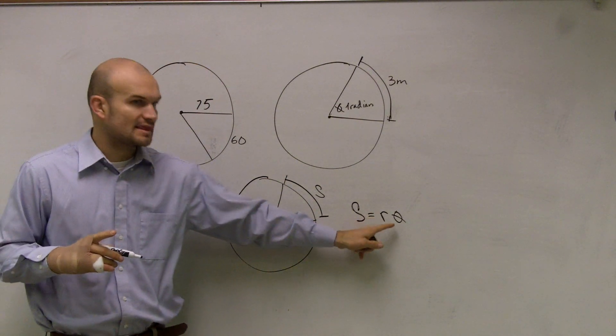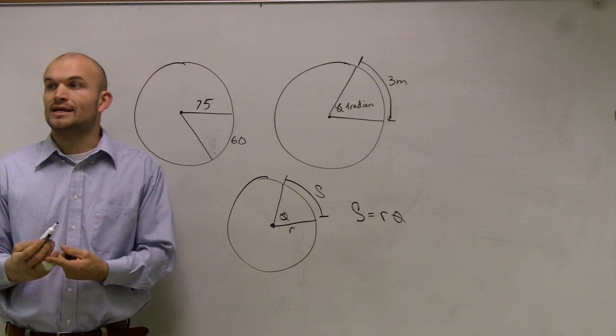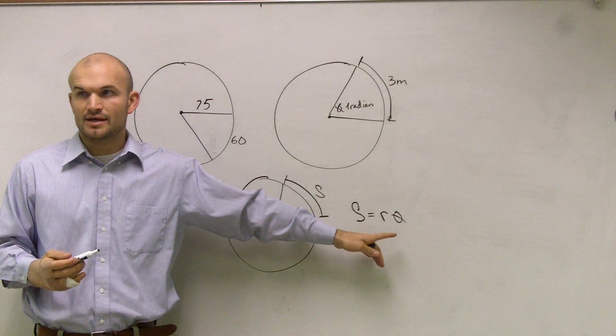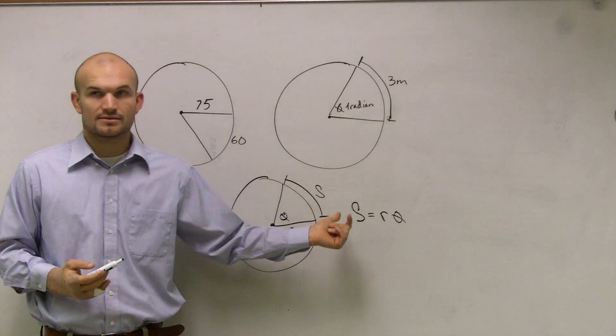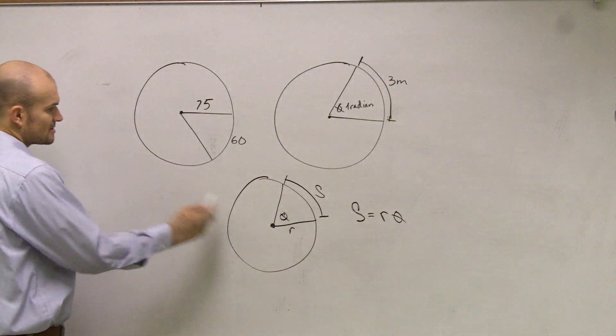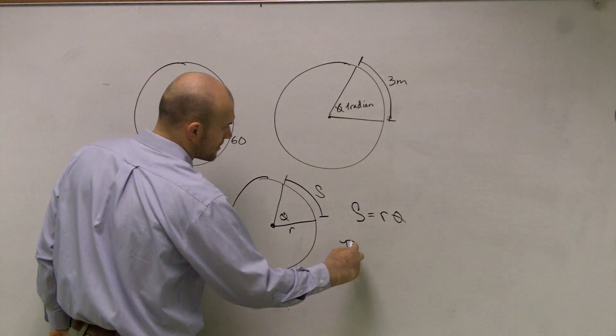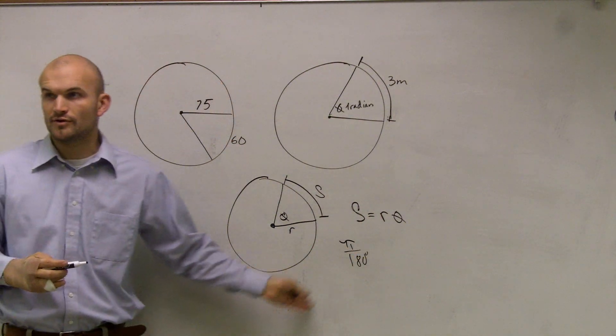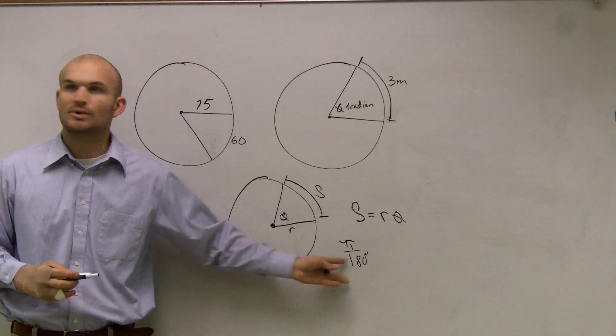The one stipulation is you've got to make sure that theta is in terms of radians. So if I give you degrees for your theta, make sure you convert it to radians. The way that we can convert to radians is by using our ratio to convert from degrees to radians. You can use that ratio to multiply out.